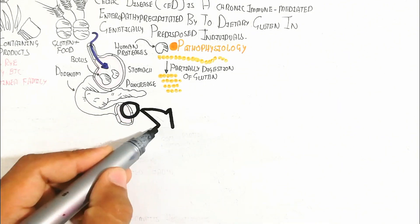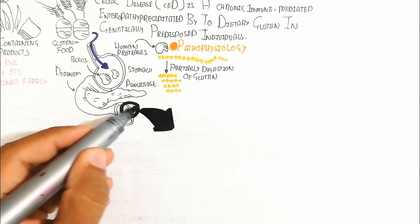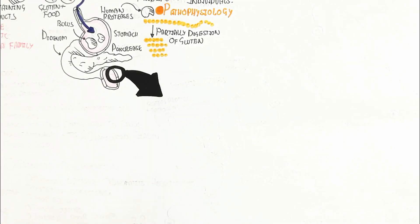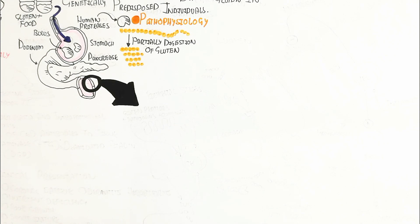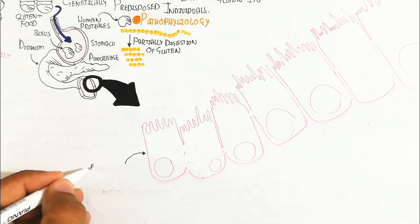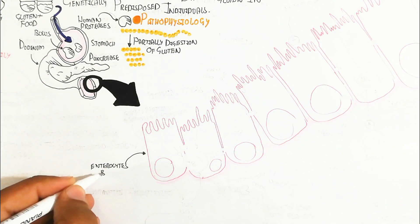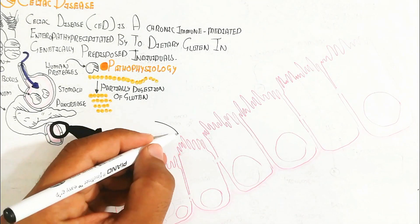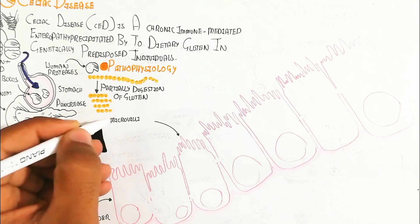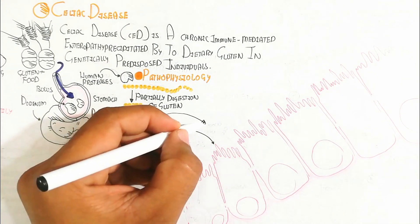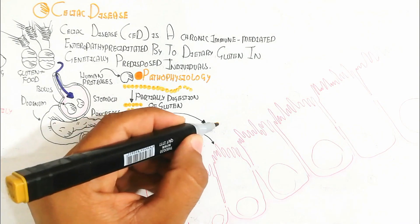Here is the enterocyte lining the small intestine, also known as a brush border cell, which contains microvilli to increase surface area for food absorption. In celiac disease, these microvilli are damaged, leading to decreased surface area. This causes malabsorption of food and many complications can arise.